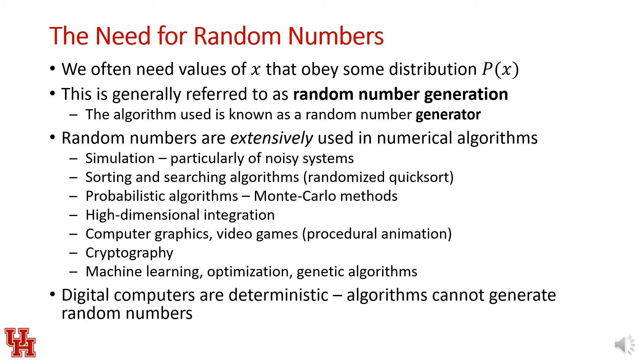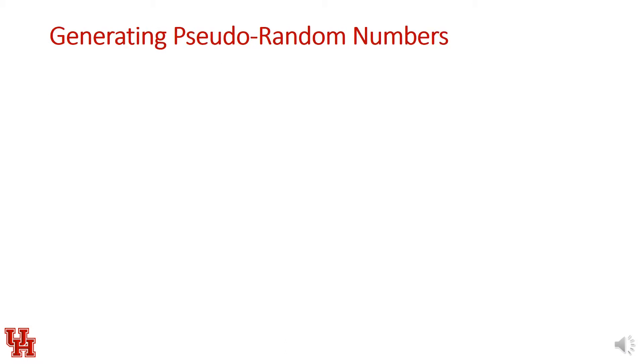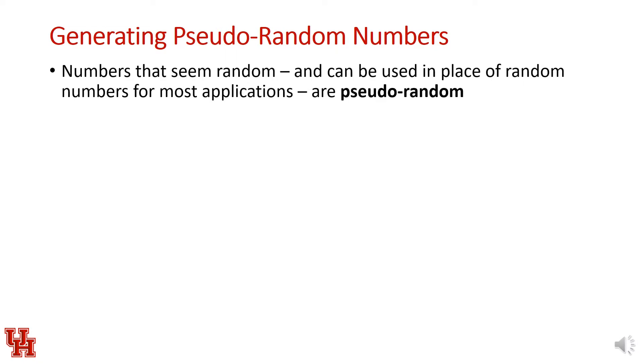The problem is that digital computers are deterministic. Algorithms can't generate actual random numbers. So instead, we're relegated to using pseudo-random numbers, which are numbers that seem random and can be used in place of random numbers for most applications.